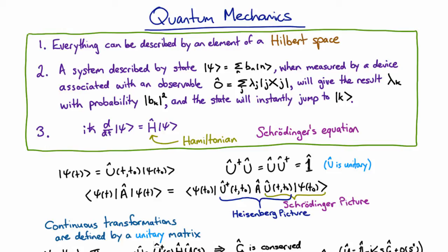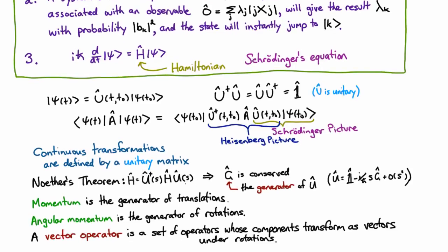We then looked at transformations, which are families of unitary matrices, and discussed that Noether's theorem showed that if the Hamiltonian commuted with that transformation, then the generator of that transformation was conserved. The generators are always Hermitian operators, and therefore can be observables.